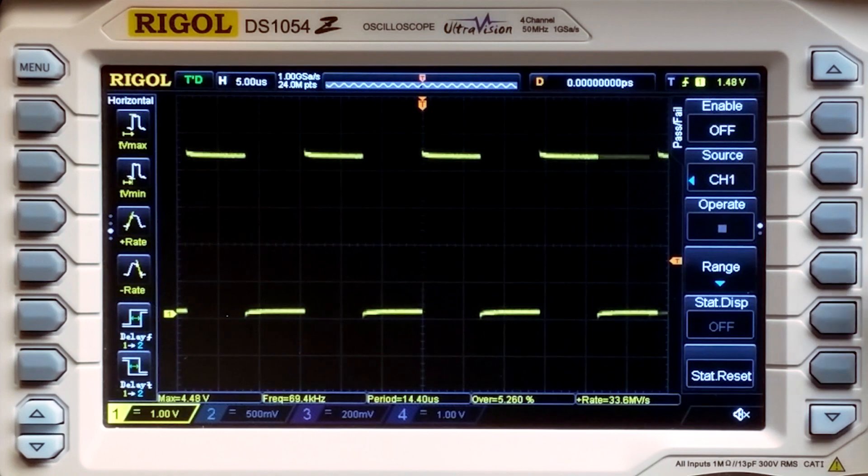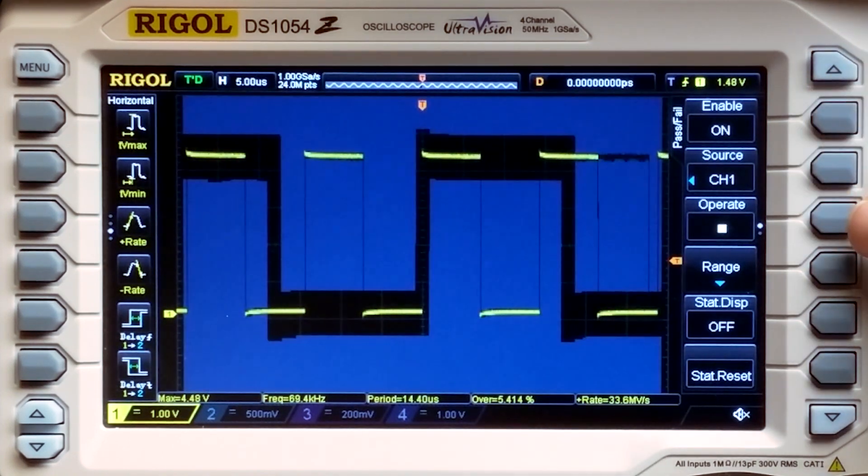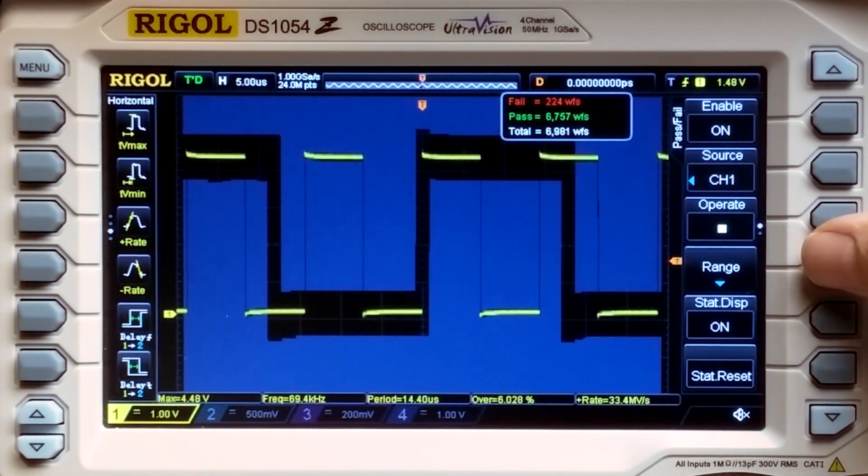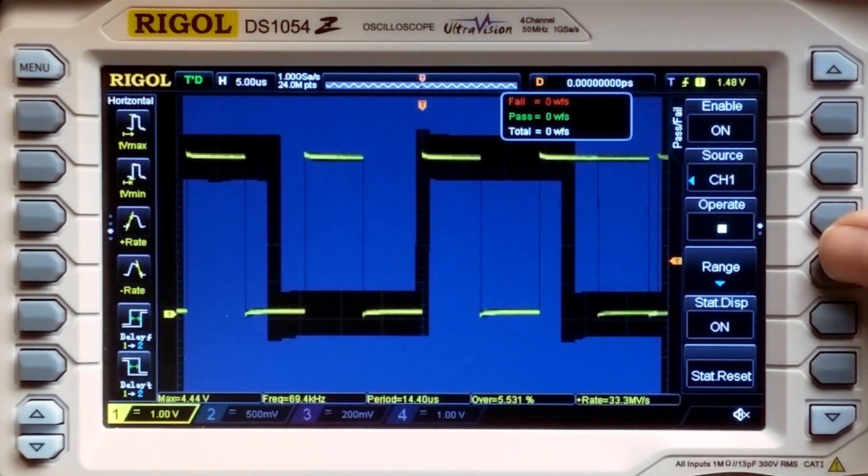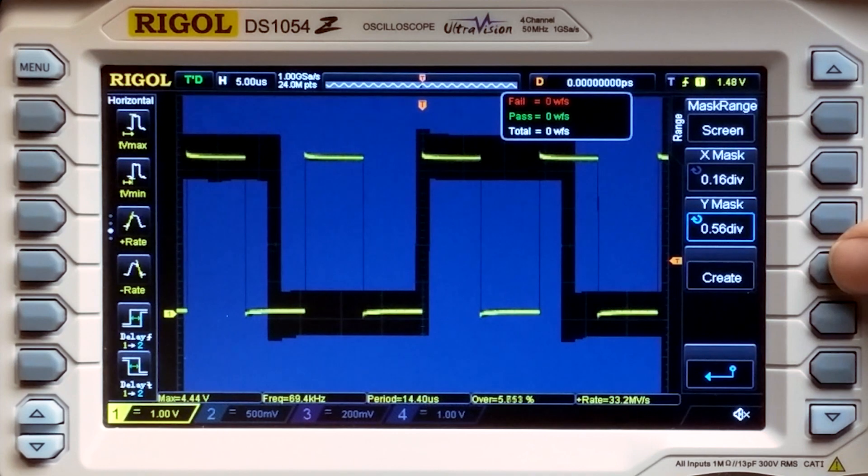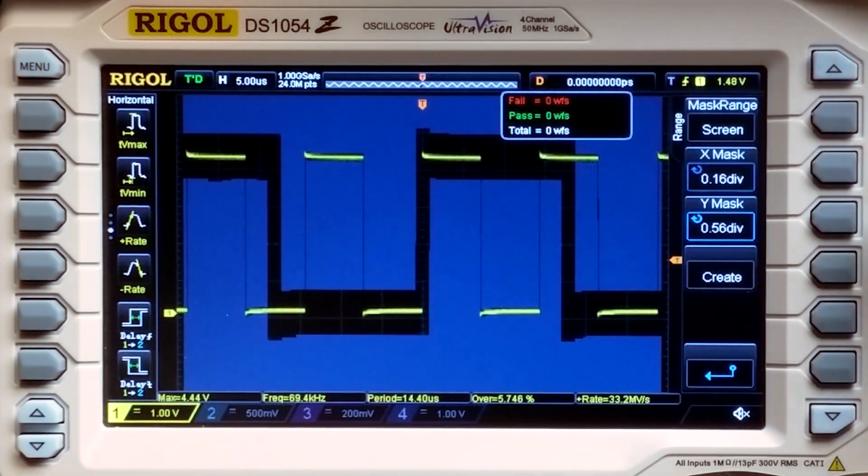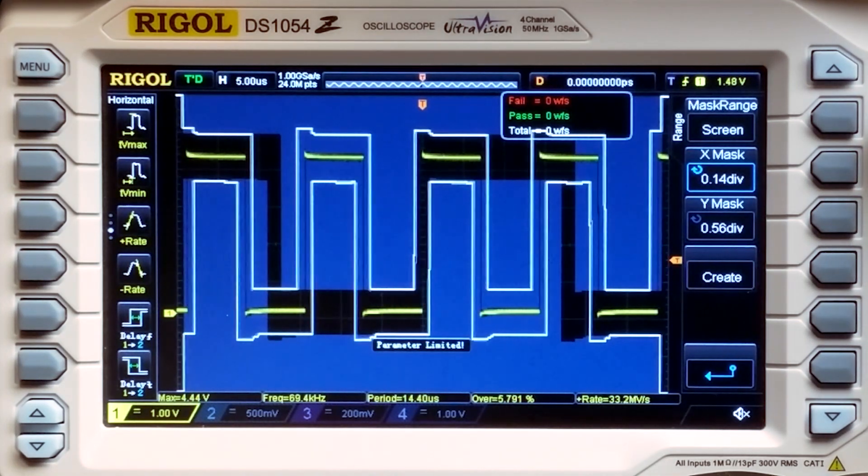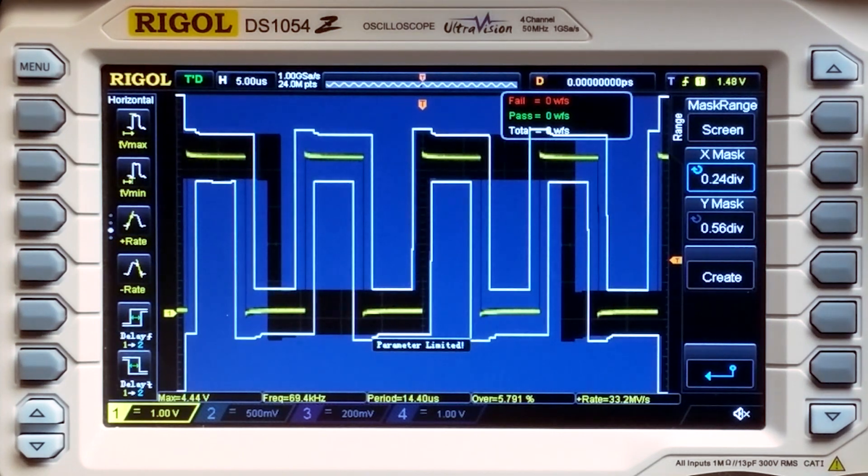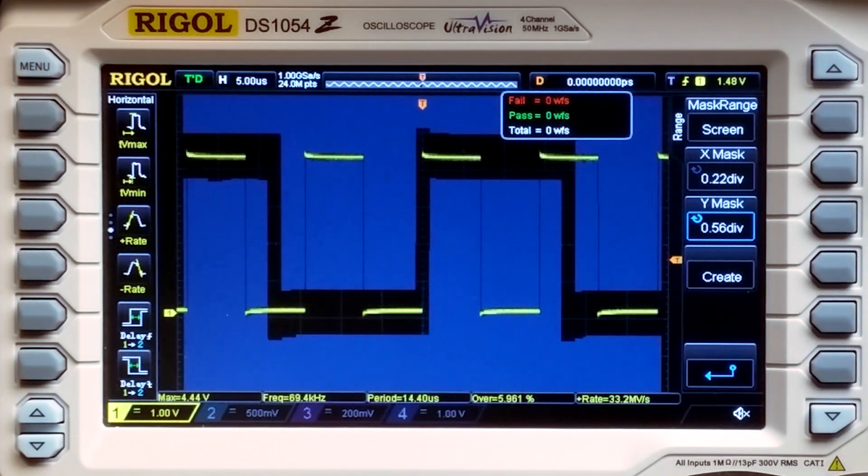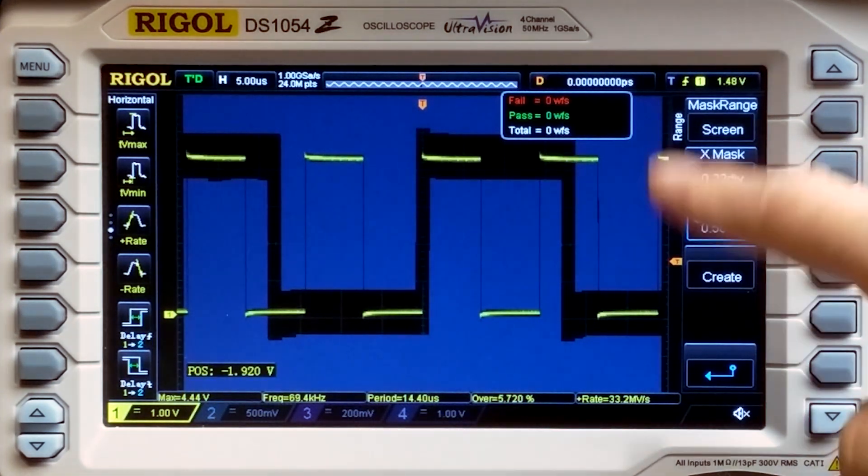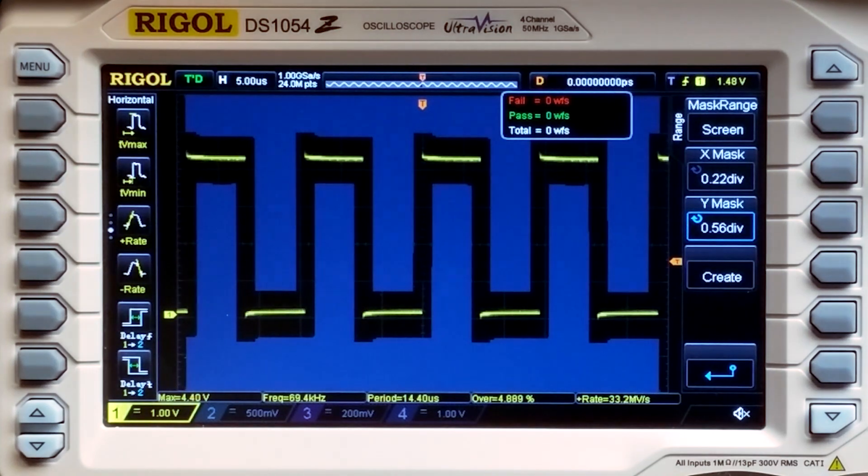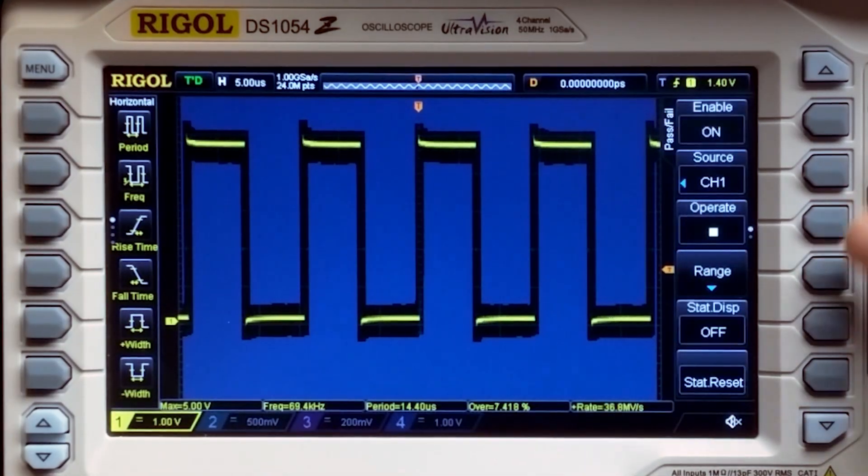I'm not real good at this particular function yet. Turn this on, and we'll reset this. Click on range, and we can change the size a little bit. It doesn't have to be really tight or anything. It's funny how the mask doesn't seem to do the right thing. Anyway, we have a mask. I'm in utility, I'm going to pass fail.